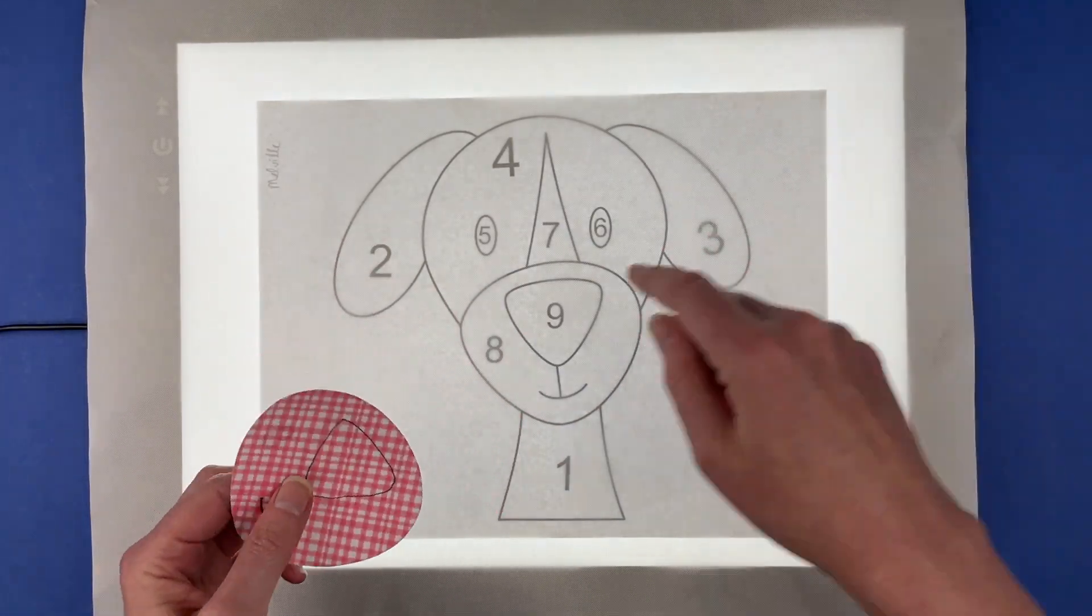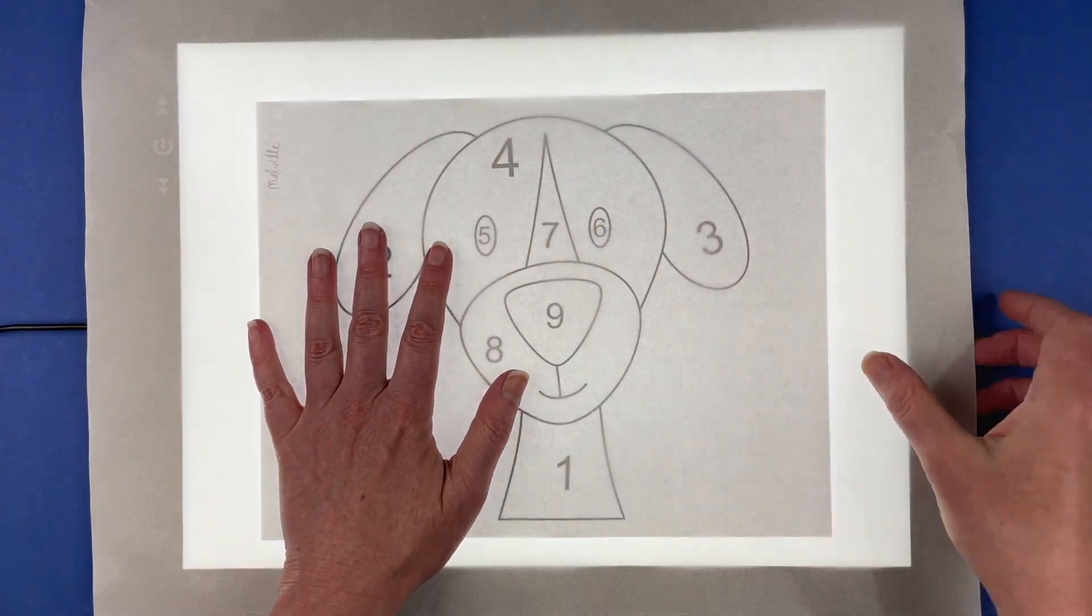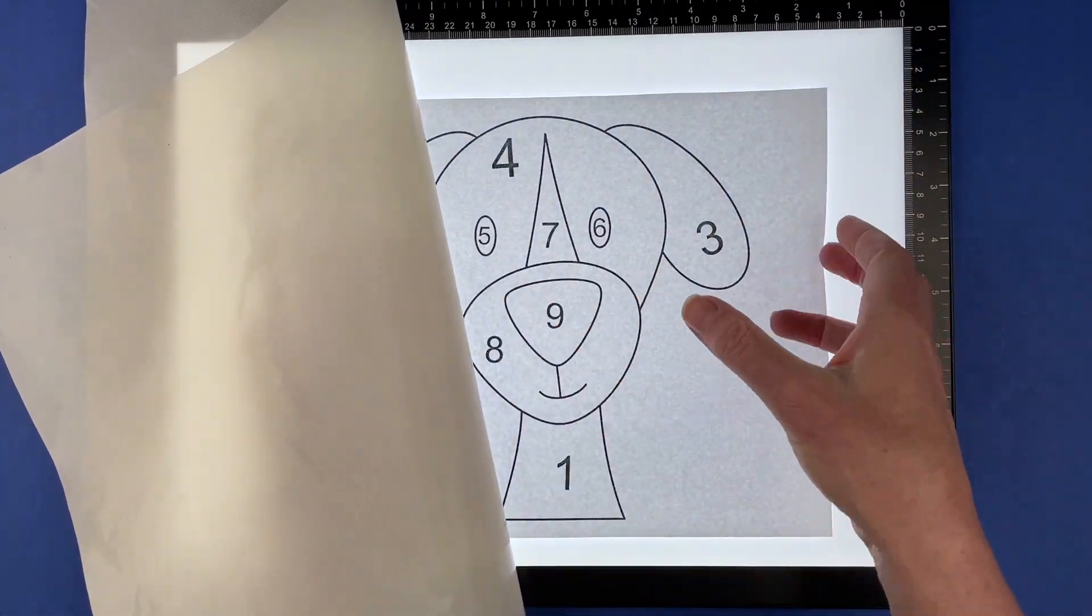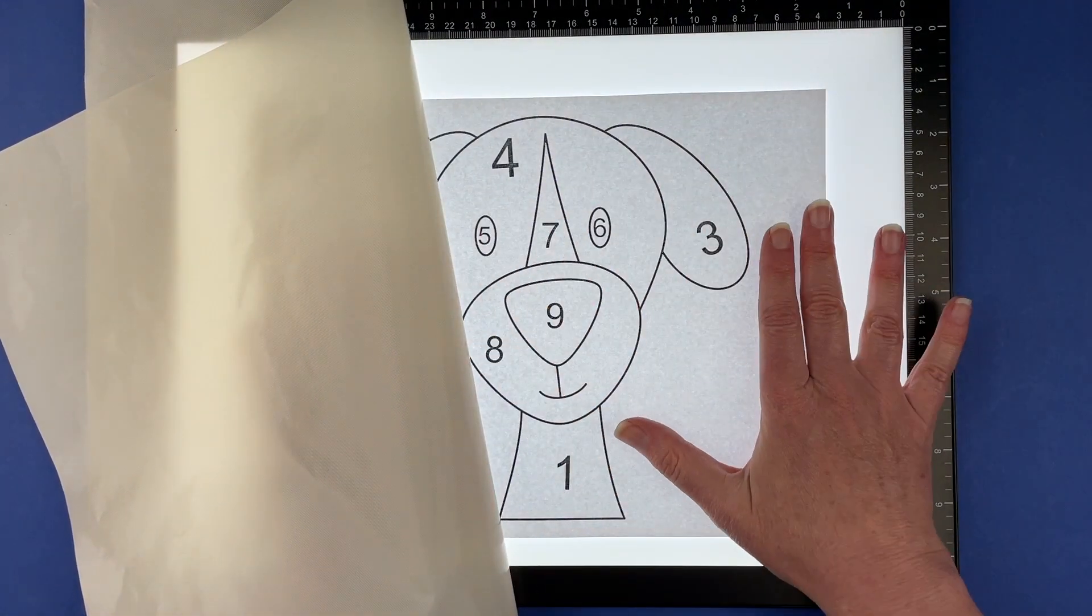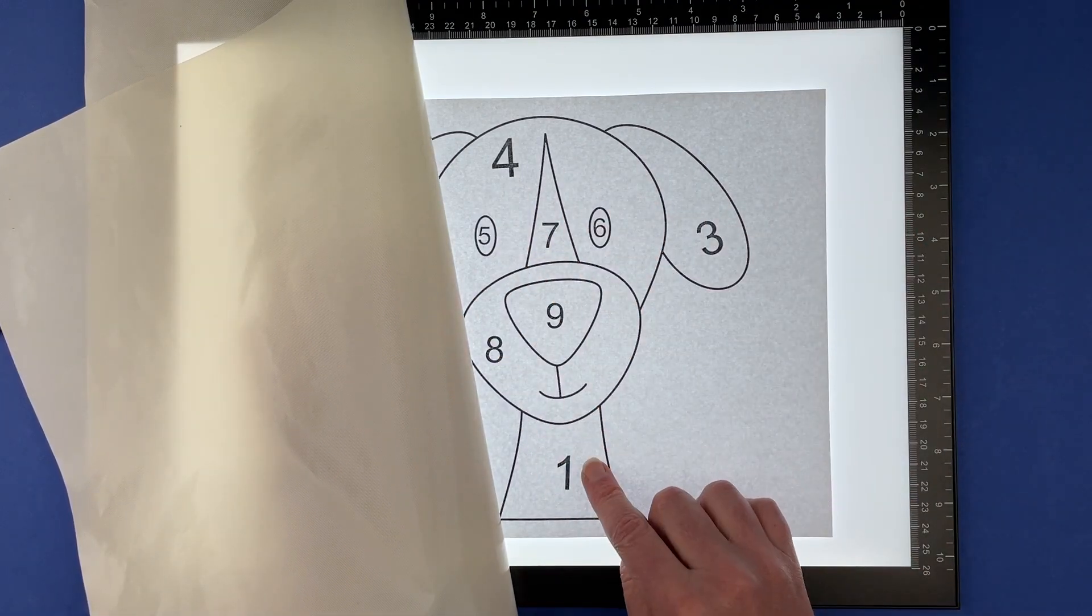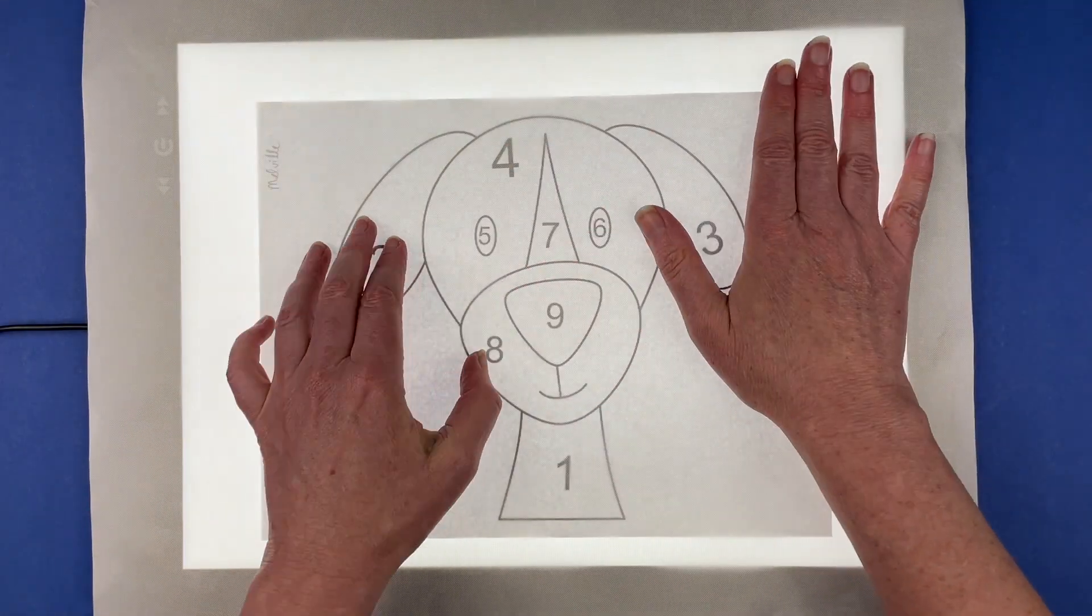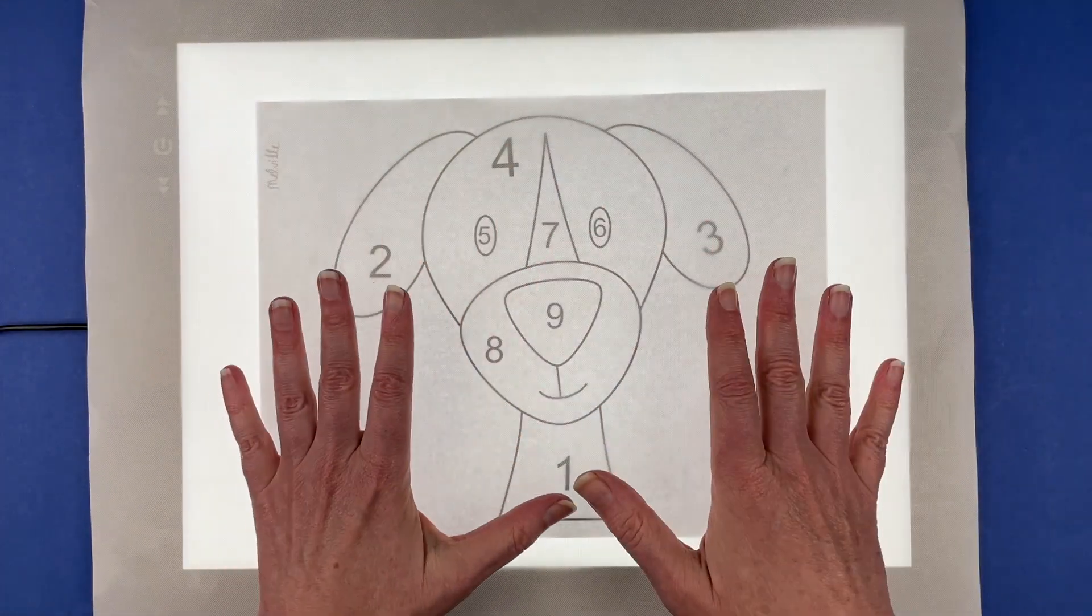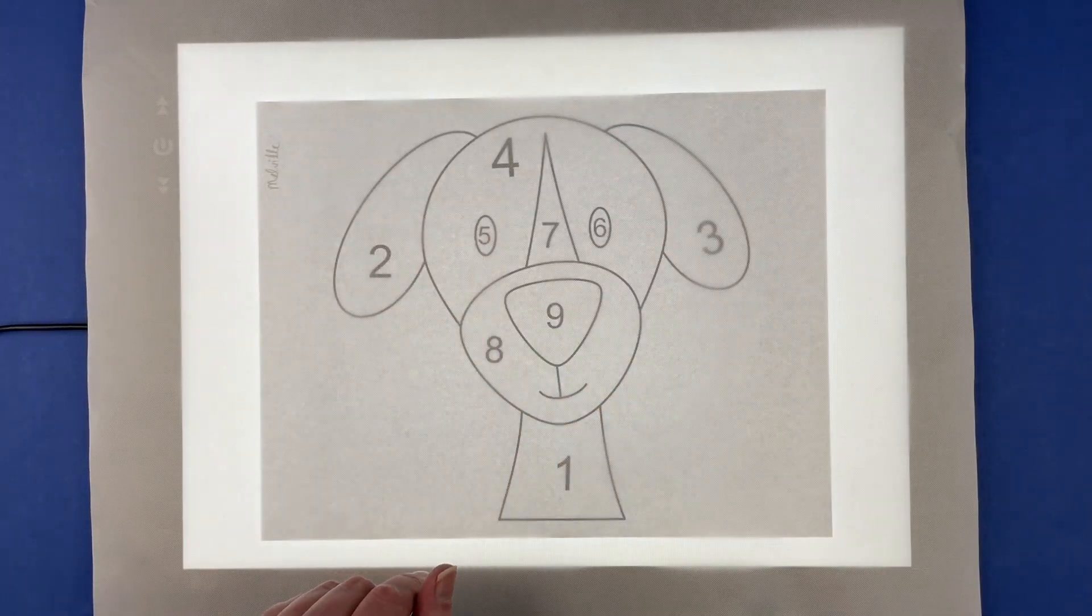The numbers on the pattern tell you the order in which you're going to lay the pieces down. I've got this all set up: my light box with the brightness turned up as bright as it'll go, then I've got my placement guide that has all the numbers on it, then I have a silicone mat that is going to hold all of the pieces together, and then I'm going to iron them together right on this mat.